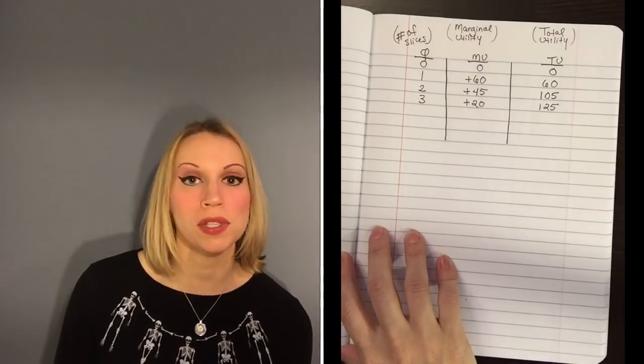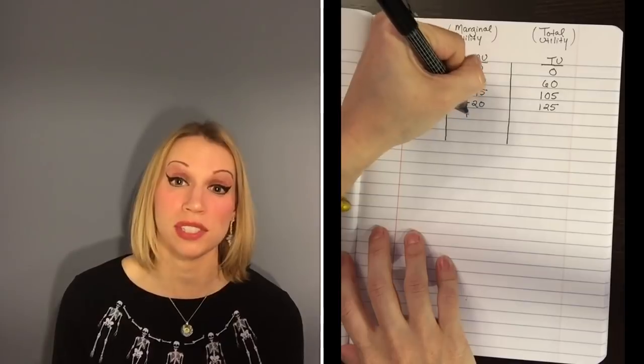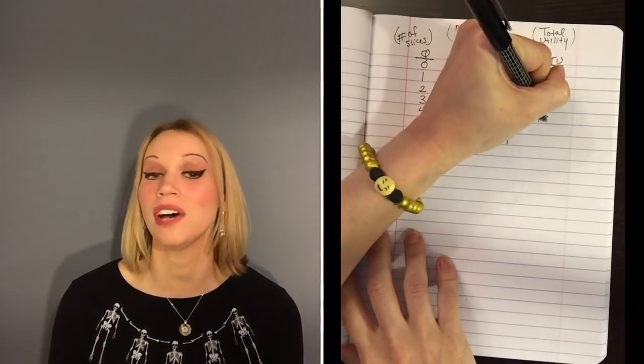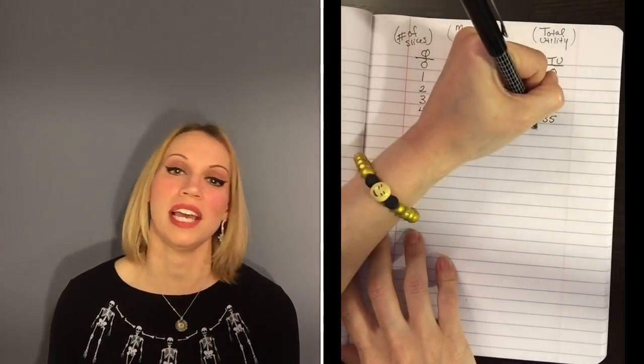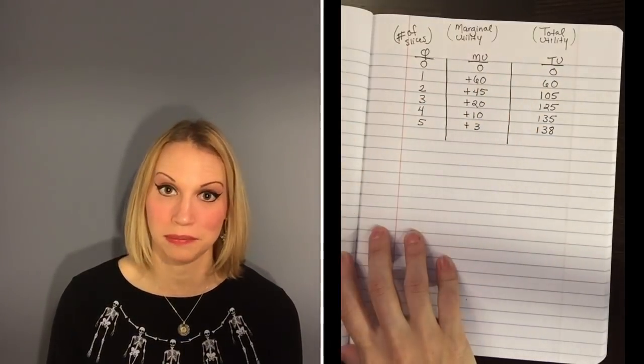You eat a fourth slice. The pizza is cooling down, you're getting fuller, so let's say that fourth slice only gives you an extra 10 utils, making your grand total 135. And then finally, that fifth slice only gives you an extra 3 utils, so now your grand total is 138 utils from five slices of pizza.